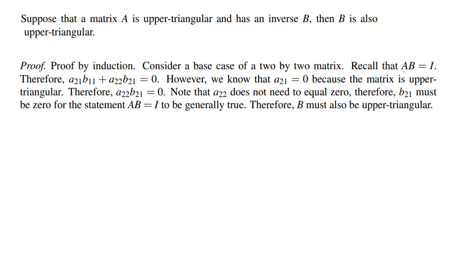Recall that AB = I. Therefore, a₂₁b₁₁ + a₂₂b₂₁ = 0. It means that your matrix has an inverse like B.